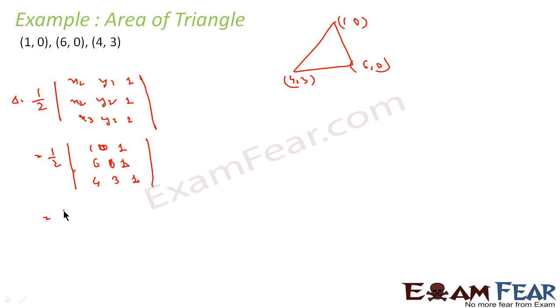So if you solve this, this comes out to be 1 into (0 minus 3) minus 0 plus 1 into 6 into 3, 18 minus 0. This is nothing but 1 by 2 into minus 3 minus 3 plus 18 is 15. 1 by 2 into 15 that is 15 by 2 square unit.